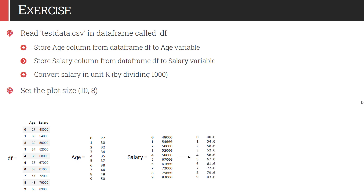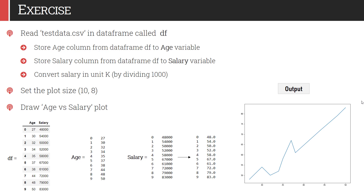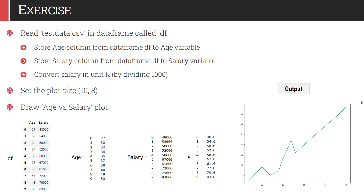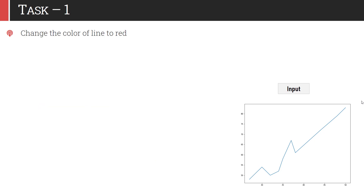Next, you have to set the plot size to 10 by 8 and create a plot of age versus salary. So the basic plot would look like this. Now I'll start with the 20 tasks. The output of task 1 will be used as an input to task 2, and similarly the output of any task will be used as an input to the next subsequent task. So this output we will use as an input to task 1.